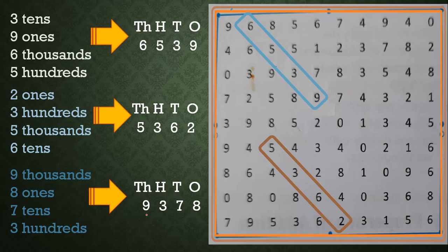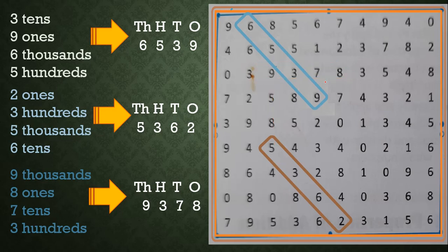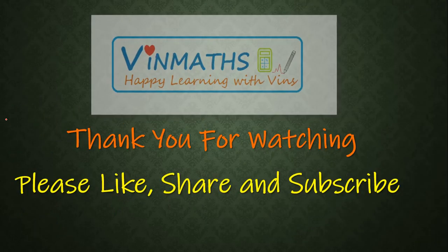After rearranging all the place values we get the number nine thousand three hundred seventy-eight — 9378. Searching in the grid: checking the digit 9 horizontally, vertically, and diagonally for multiple nines — not found. Then at the next 9, looking horizontally we get the required number 9378. We circle it. These are the three numbers we found using the given jumbled place values. Practice the remaining two yourself. Thank you for watching — God bless you all.